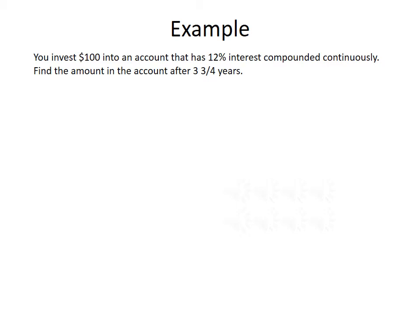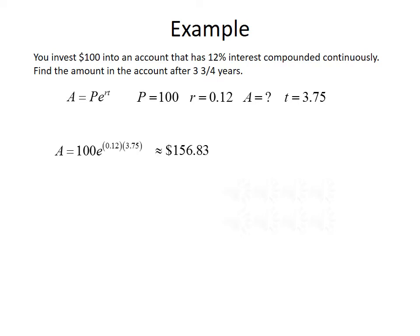Here's one last example: we invest $100 into an account that has 12% interest compounded continuously. Find the amount in the account after three and three quarters years. Since interest is compounded continuously, we use the formula A equals PE to the RT. P is 100, R is 0.12, and T equals 3.75. So A equals 100 times E raised to the 0.12 times 3.75 power, which gives us approximately $156.83.